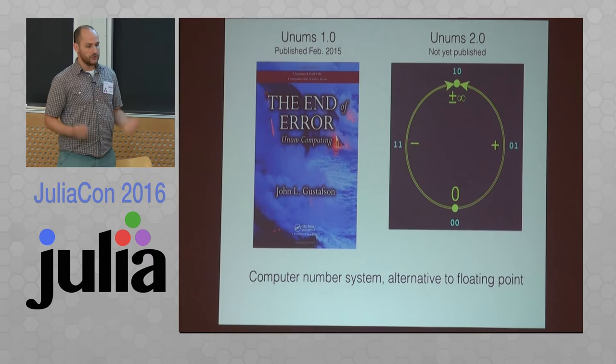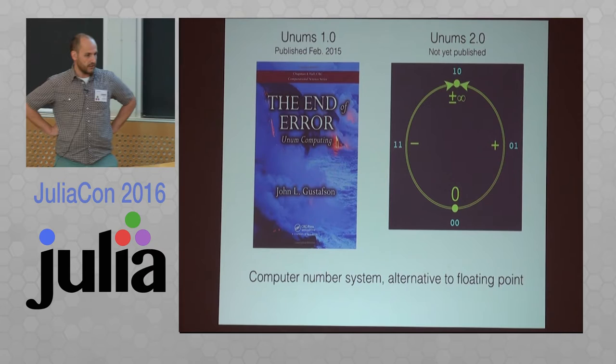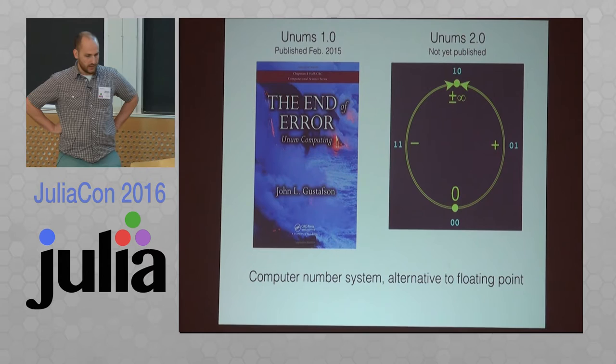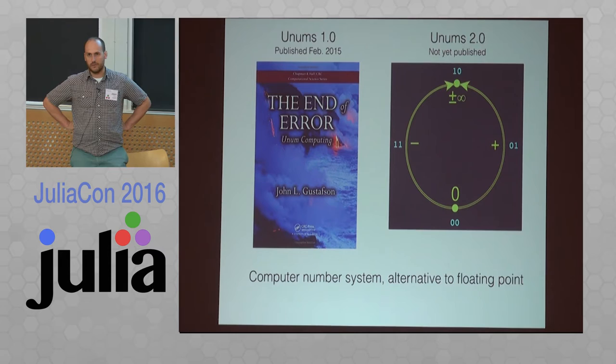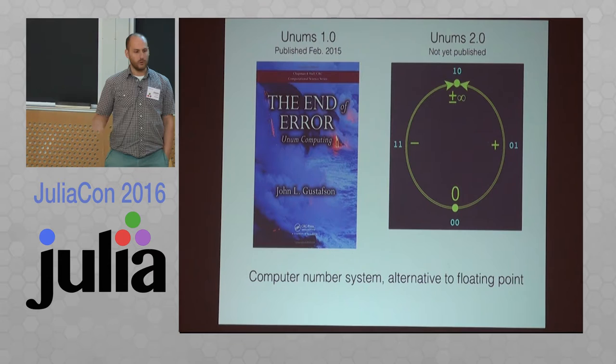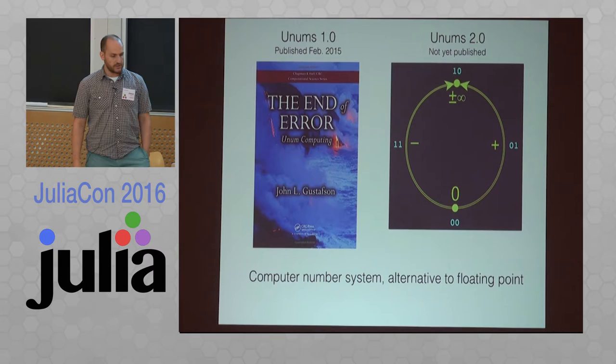I'm Jason Merrill. I'm going to talk about unums, which are an alternate computer number system meant to compete with floating point and interval arithmetic. The first version of unums was published in a book called 'The End of Error' by John Gustafson. Since then, there have been about three or four different partial Julia implementations of that idea. It's a cool book — I learned a lot about floating point and the way computer processors execute it, giving a different perspective into numerical computing.